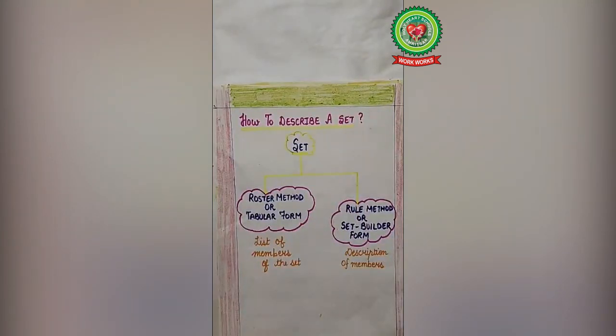Now today's topic: how to describe a set? We can write a set in two ways. First one is roster method or tabular form, and second one is rule method or set builder form.